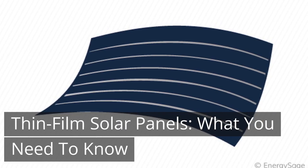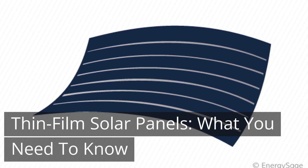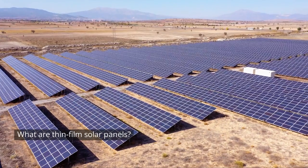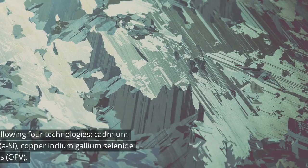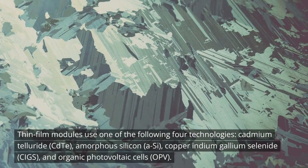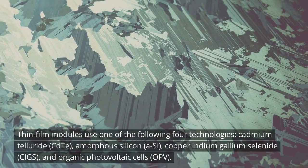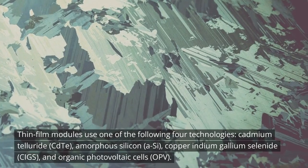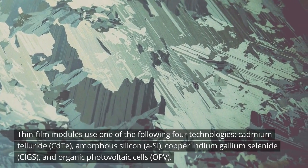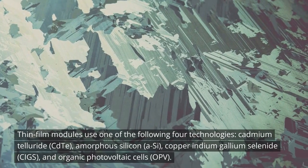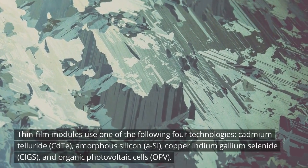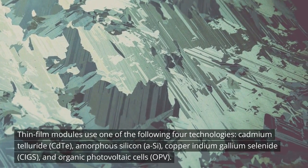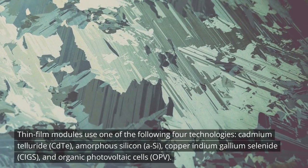Thin-film solar panels: what you need to know. What are thin-film solar panels? Thin-film modules use one of the following four technologies: cadmium telluride (CdTe), amorphous silicon (a-Si), copper indium gallium selenide (CIGS), and organic photovoltaic cells (OPV).